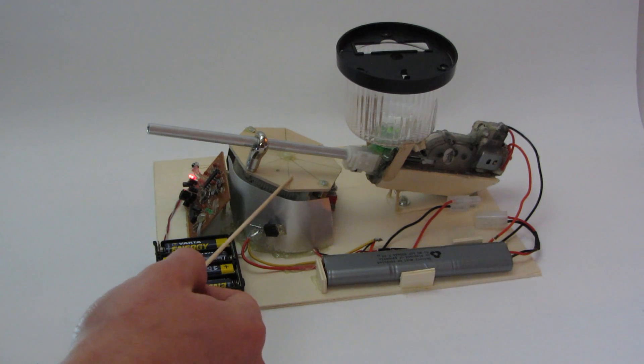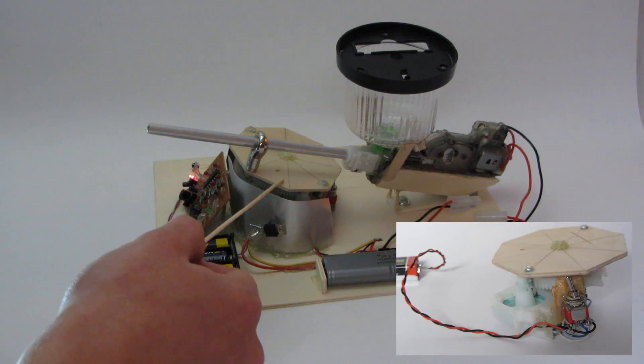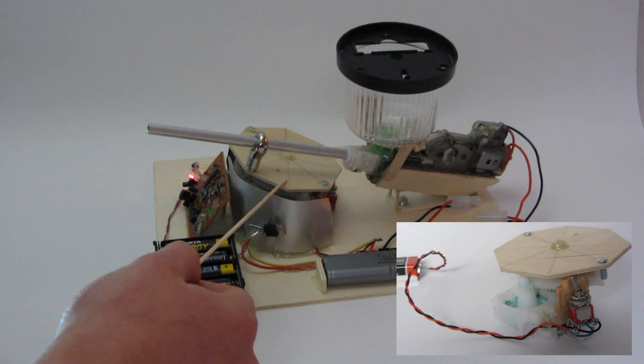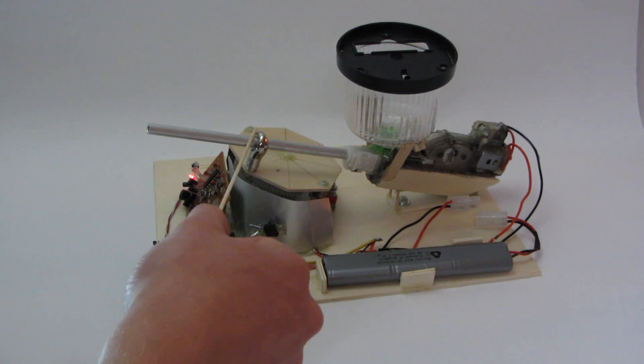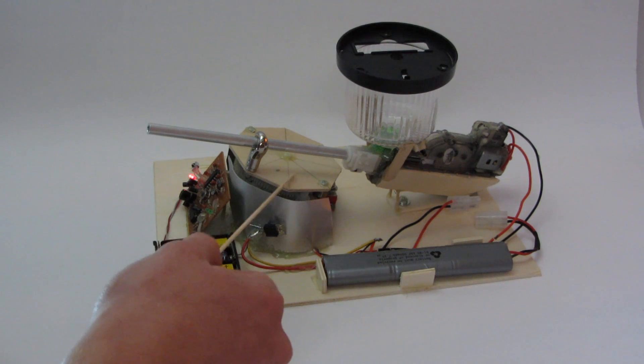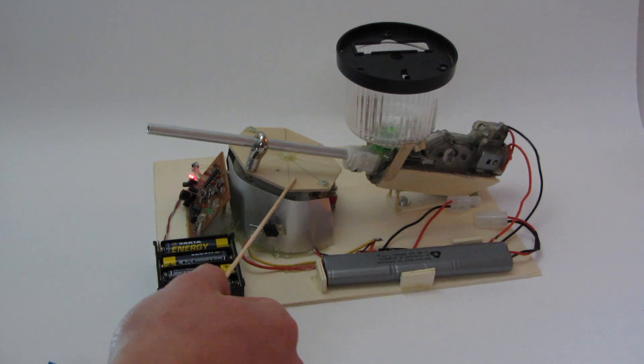And this is the self reversing disk which makes the turret aim left and right. I will put a link in the description or in the video to this self reversing platform.